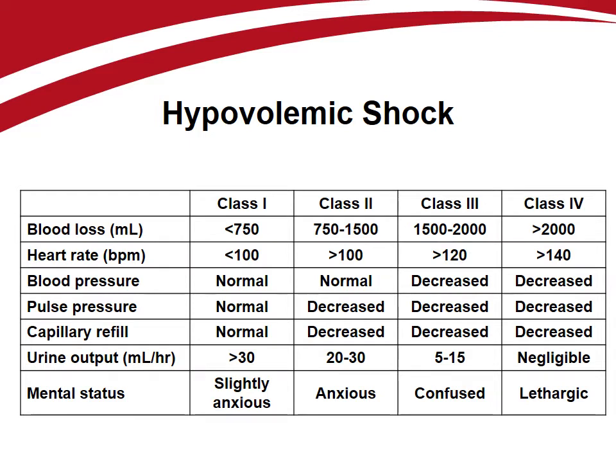Hypovolemic shock is stratified into four classes based upon the degree of blood volume loss present. It is important to recognize that significant blood volume may be lost in the absence of any clinical signs. Compensatory mechanisms allow systemic blood pressure to be maintained despite marked volume loss. A well-compensated patient may display tachycardia as the only objective clinical abnormality, even with a blood loss of up to 30%. Thus, a patient's shock state may not be readily apparent until they are in Class III shock.